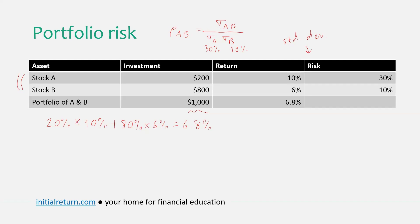For this particular example, let's assume the correlation coefficient between the two stocks is -0.44, so there is some negative correlation. I've picked this number on purpose to get some nice figures. Using that, I can compute the covariance between the two stocks.